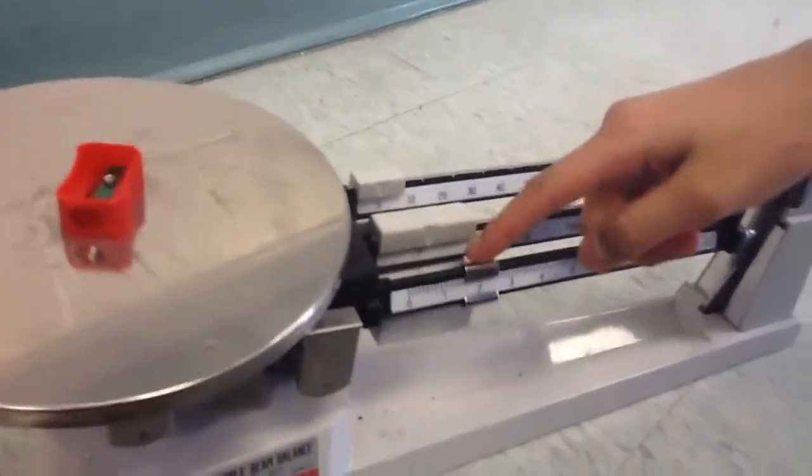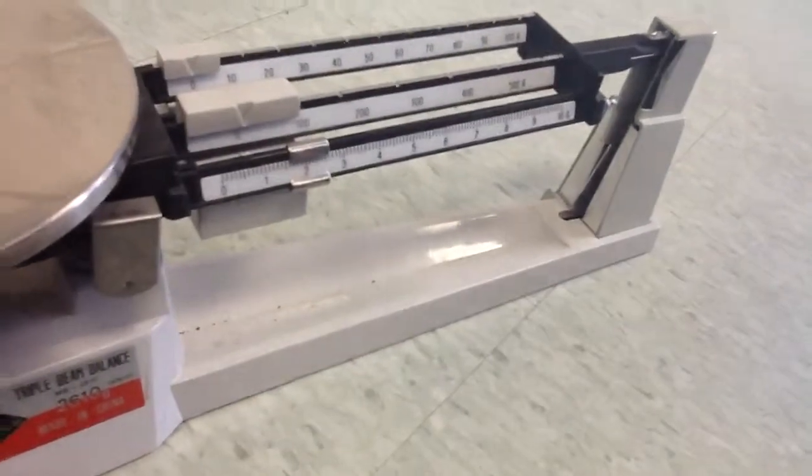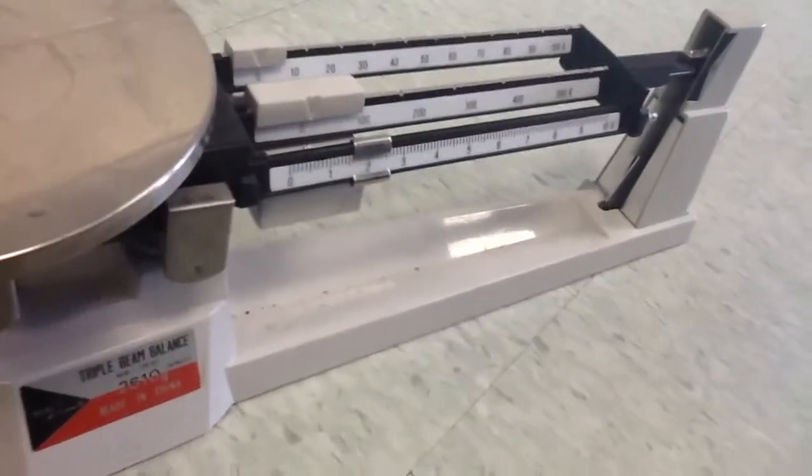Yeah, so because of this, we need to balance the weight. And as you can see, the sharpener is light, so we should move the light weight over. Let's try about two grams. As you can see, it's rocking back and forth, which is a sign that it is close to two grams, but not exact.